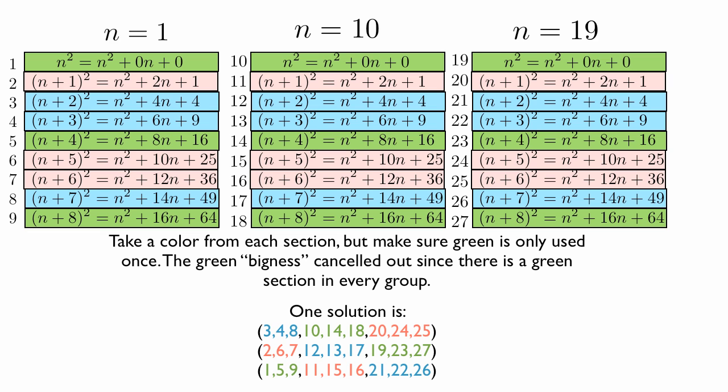So as long as we take one color from each of these groups, n equals 1, n equals 10, n equals 19, then that green is bigger cancels out, and we're left with a solution. So there's more than one solution to this problem, as long as we don't disobey our rules in picking the colors from each section.